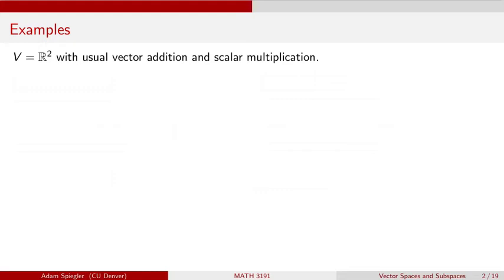And so let's check to see whether these properties, these 10 properties for a vector space are satisfied. So recall, the first property is that this set is closed under the addition operation. So if I take any two vectors in R², and I add them together, that results in a vector in R². So that is satisfied.